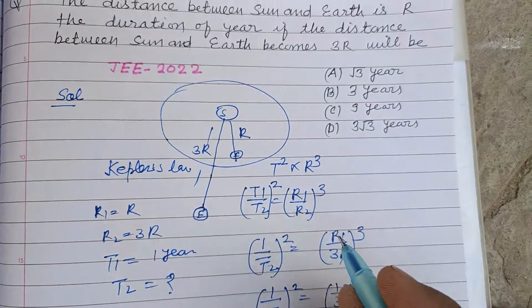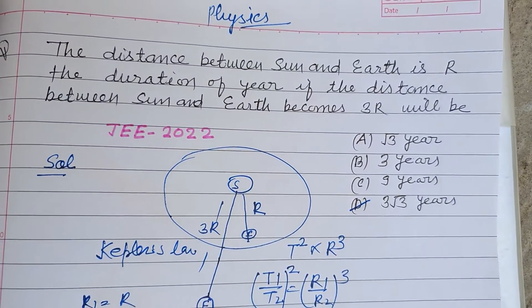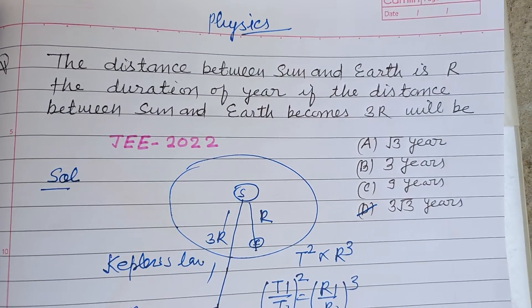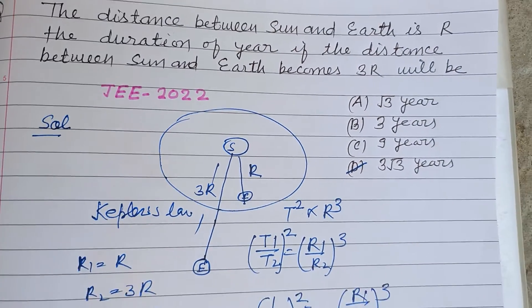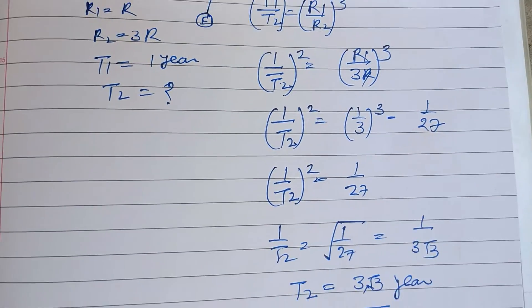The answer is 3√3, which is found in option D. Therefore, option D is correct. I hope you got it — please like the video and subscribe to the channel. Thanks for watching.